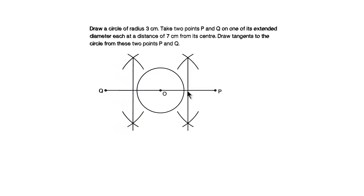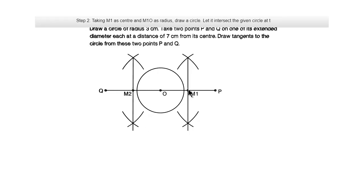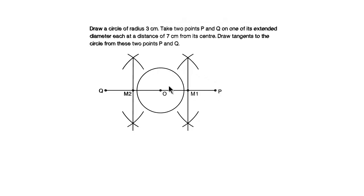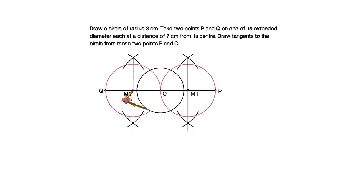Mark this intersection point as M1 and this intersection point as M2. Take M1 as a center and OM1 or M1P as the radius and draw a circle. Similarly, take M2 as a center and draw a circle. Mark the intersection points as T1, T2 and T3, T4.